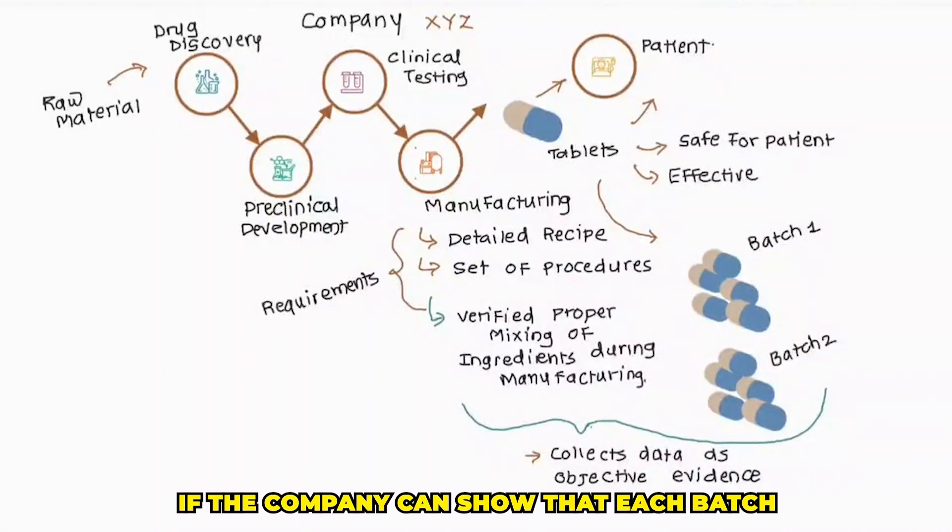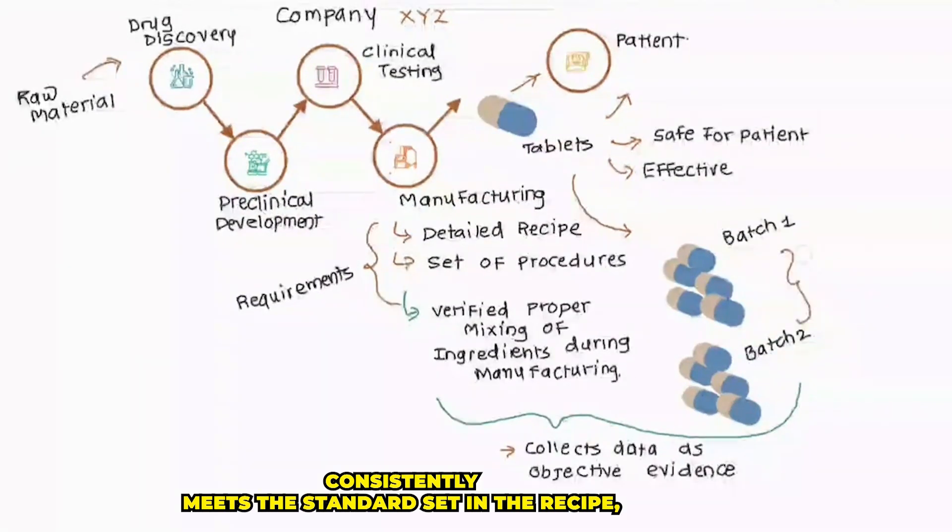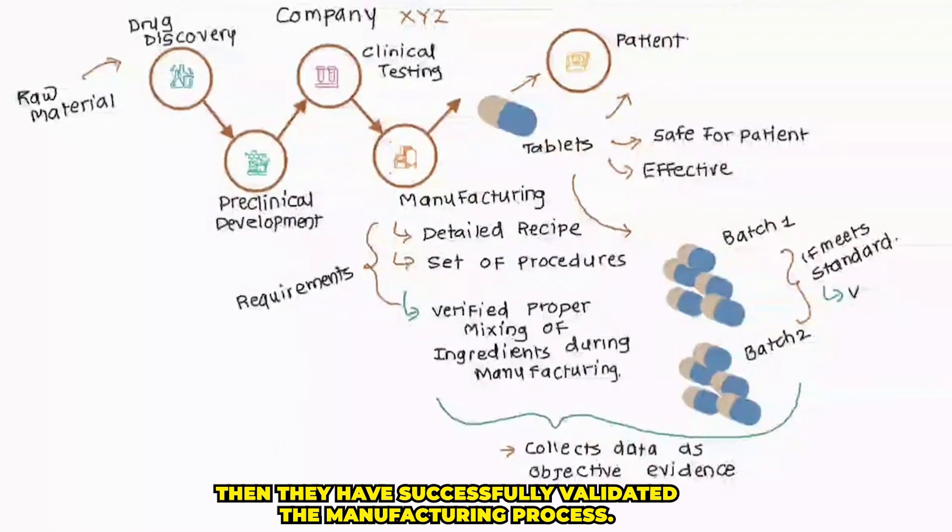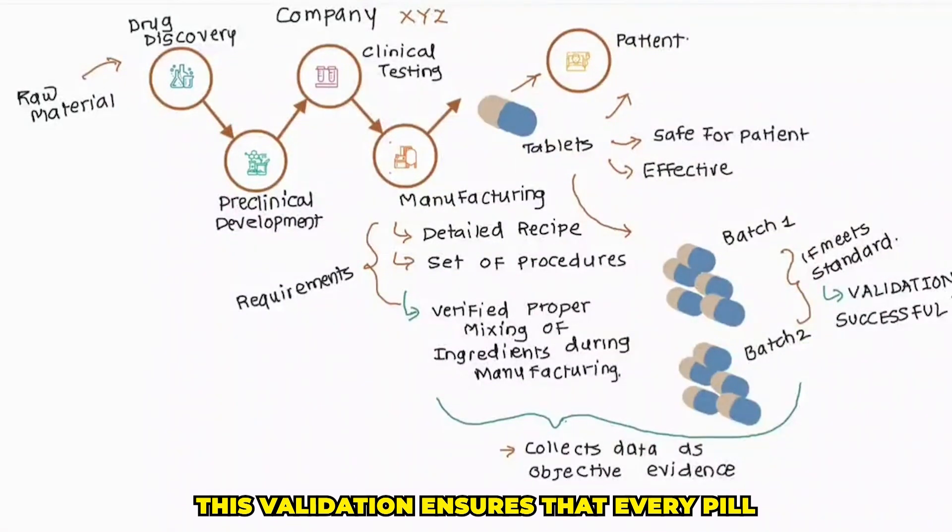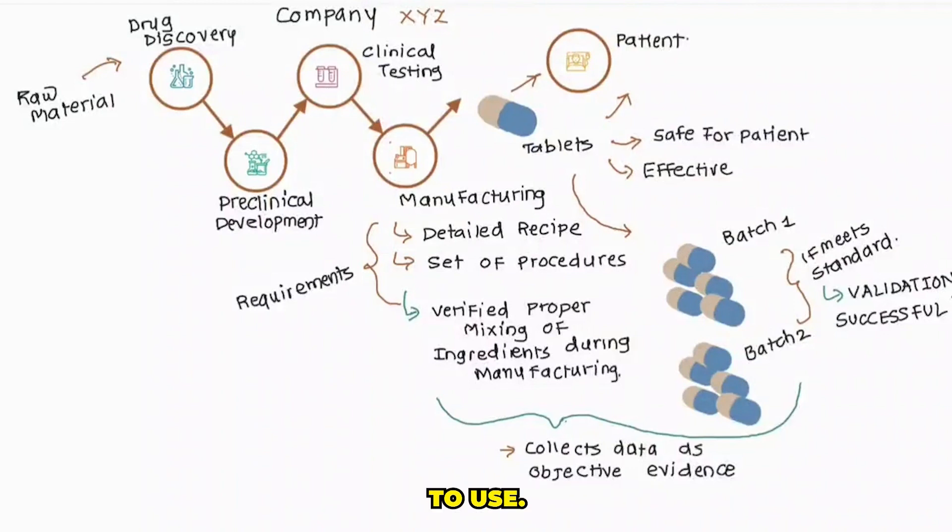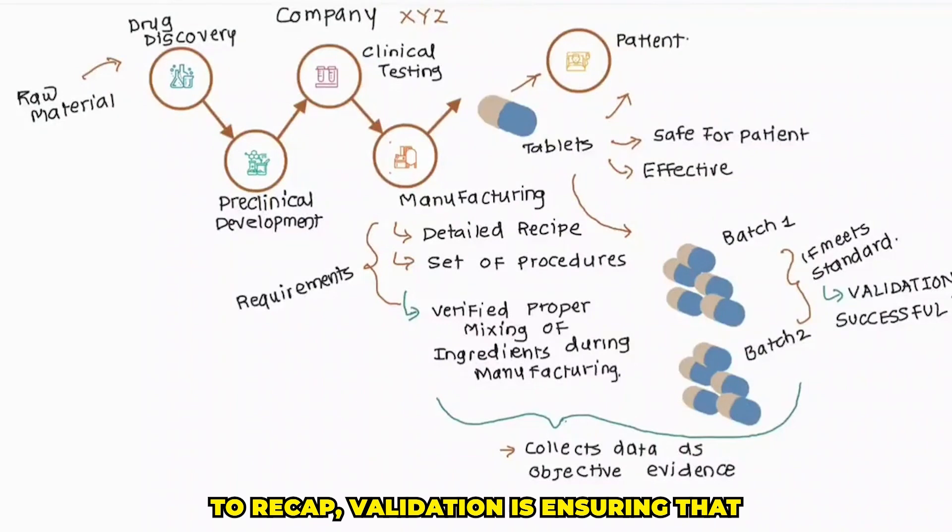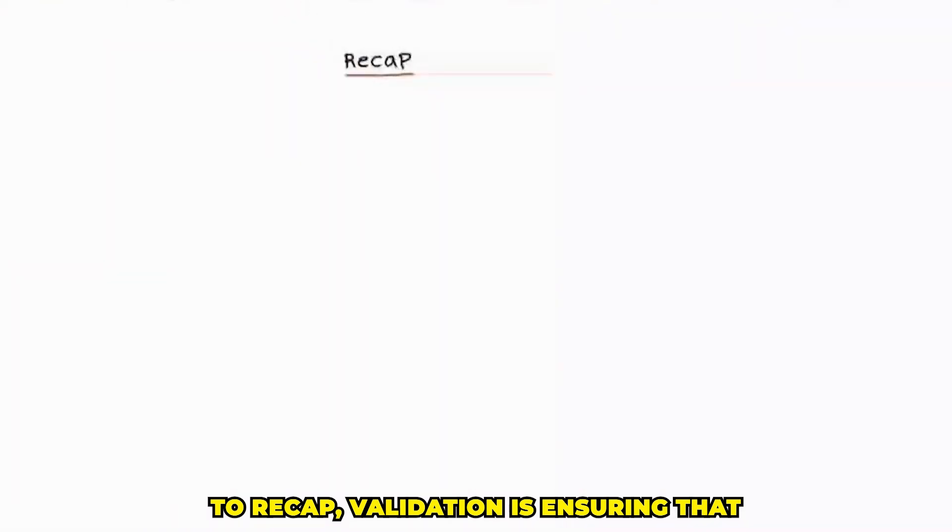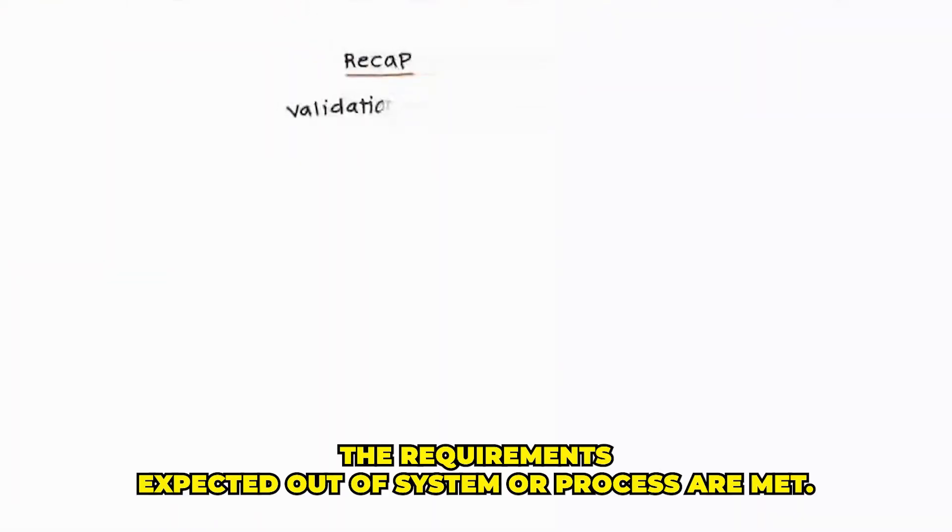If the company can show that each batch consistently meets the standard set in the recipe, then they have successfully validated the manufacturing process. This validation ensures that every pill or injection is of high quality and safe for patients to use. To recap, validation is ensuring that the requirements expected of the system or process are met.